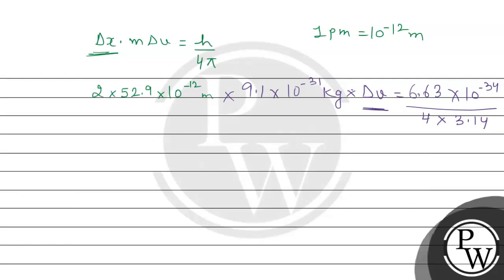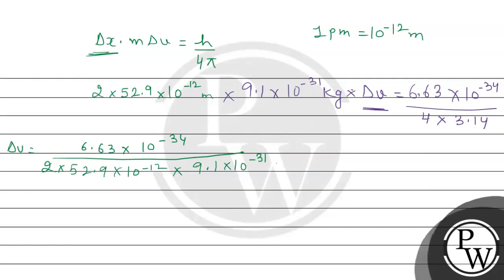Now we rearrange to find delta v. Delta v equals 6.63 × 10⁻³⁴ divided by 2 × 52.9 × 10⁻¹² multiplied by 9.1 × 10⁻³¹ kg, multiplied by 4 × 3.14. We need to check the units: Planck's constant has units of joule·second, delta x has units of meters, and mass has units of kilograms.